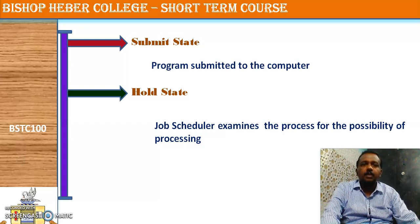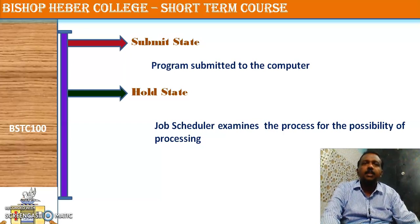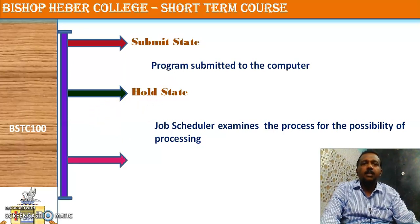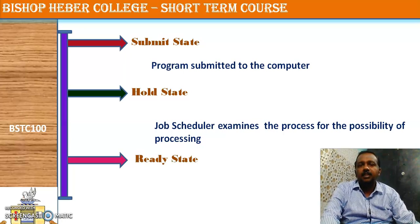For example, if the process needs a printer to complete its job and the computer does not have a printer attached, then this process cannot be taken for execution and should be rejected. The job scheduler examines the process for the possibility of processing, and if that is okay, the process is moved to the next stage — the ready state.